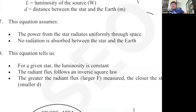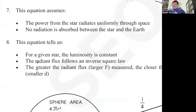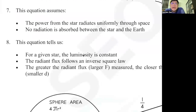One of the assumptions made for this formula is that the luminosity is constant — that means the power produced by the star is always constant. Now is that true? Over a long period of time, of course the sun will slowly die out. But for the time period where we're doing the experiment, it shouldn't drop — it should be constant.